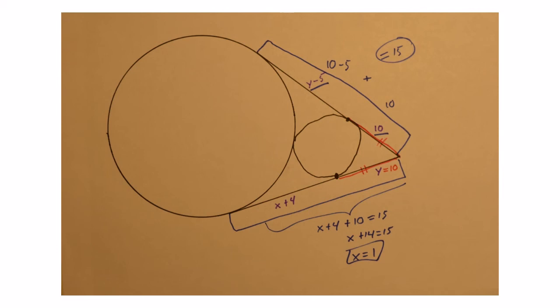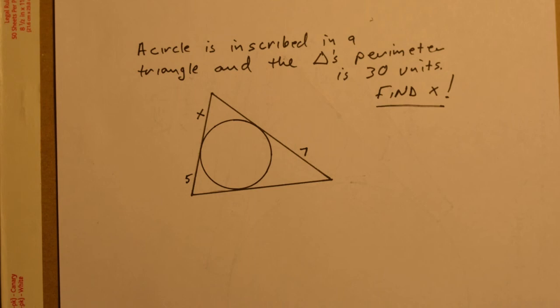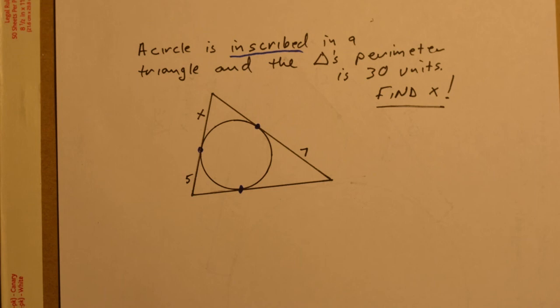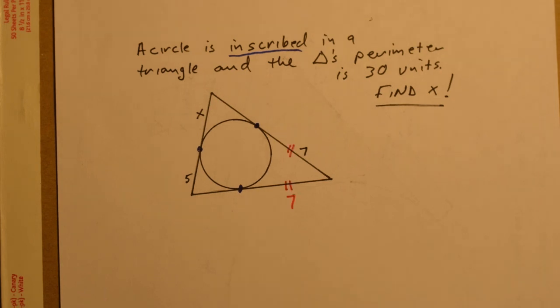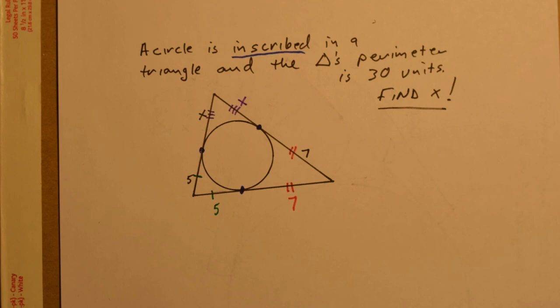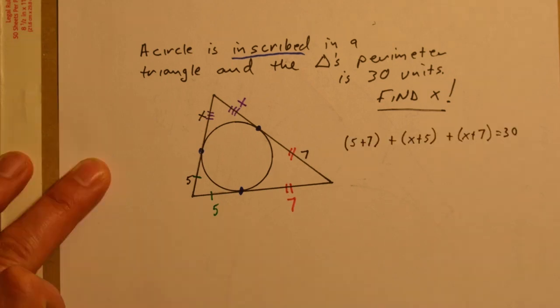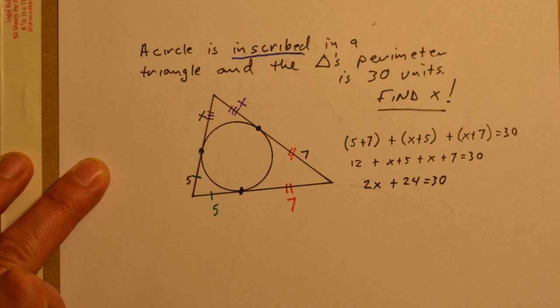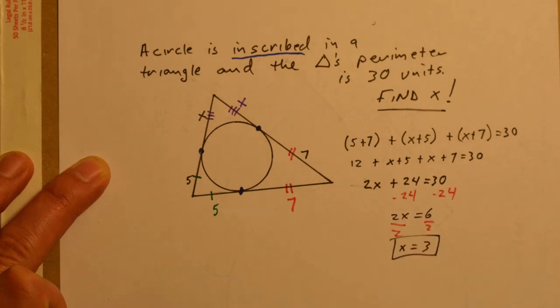One more example: a circle is inscribed in a triangle with a perimeter of 30 units, and we need to find x. Since the circle is inscribed, it creates three points of tangency. Using the tangent segments theorem, if one segment is 7, so is the one adjacent to it. Likewise, we have two segments of 5 and two of x. Since the perimeter is 30, we write: 5 plus 7 plus x plus 5 plus x plus 7 equals 30. Simplifying gives 2x plus 24 equals 30, so x equals 3.